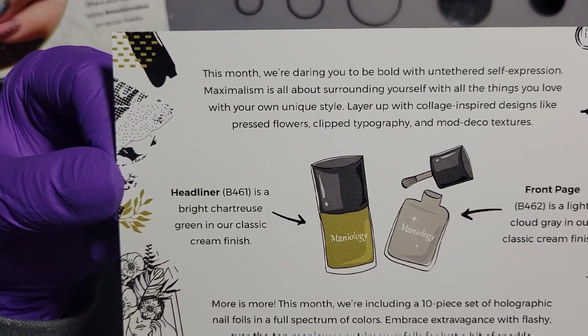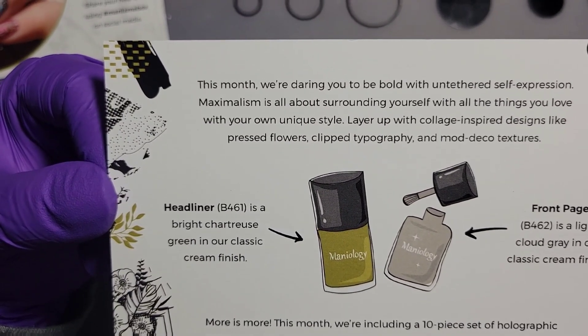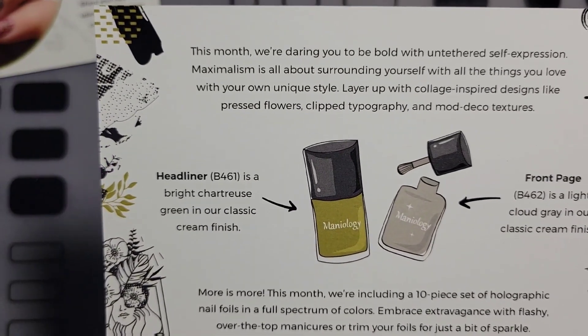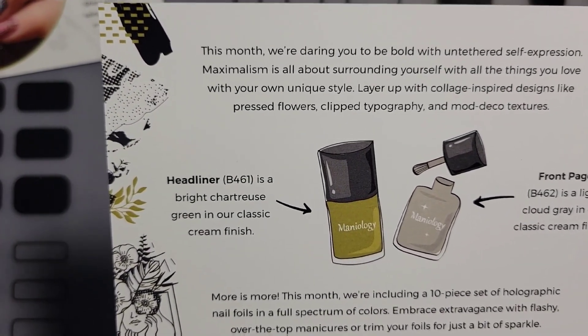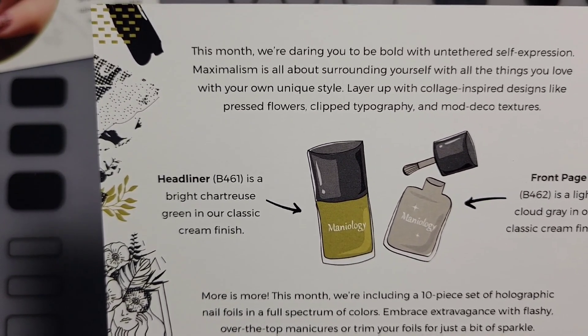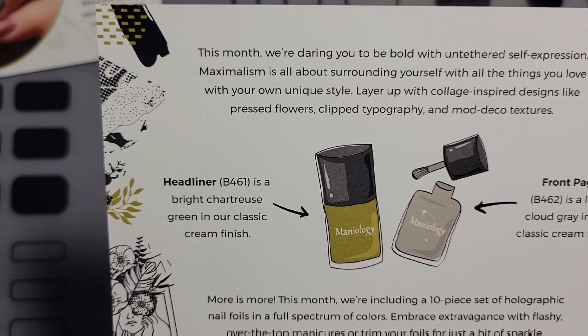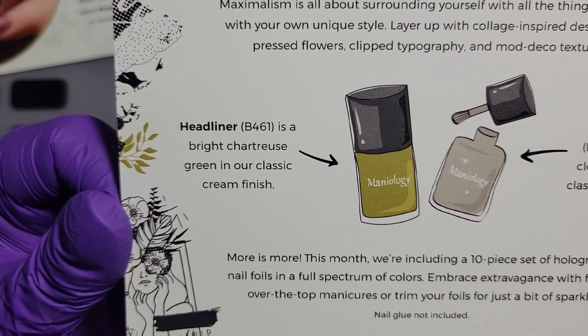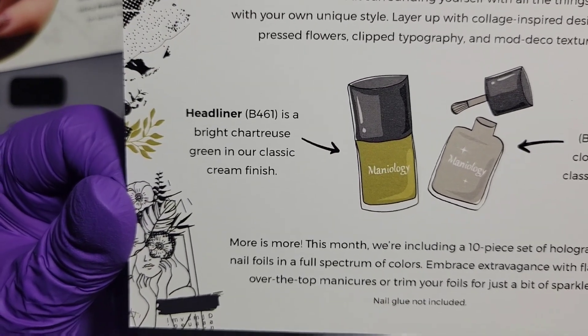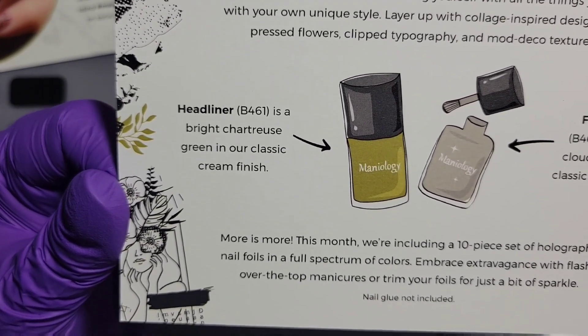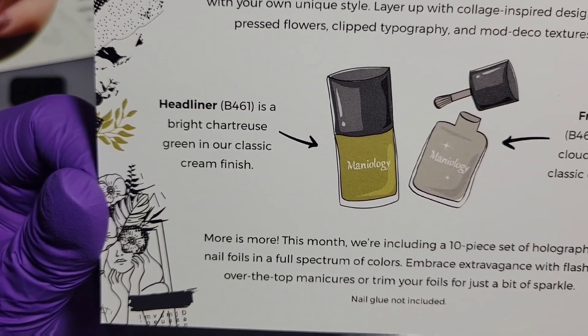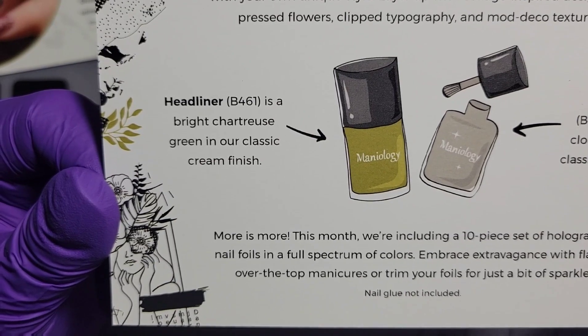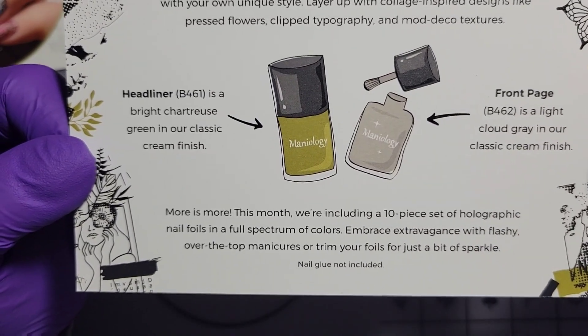This month we're daring you to be bold with untethered self-expression. Headliner is this green, bright chartreuse green with our classic cream finish. The other one, Front Range, is a light cloud gray in our classic cream finish. More is more, this month we're including a 10 piece set holographic nail foils in a full spectrum of colors.